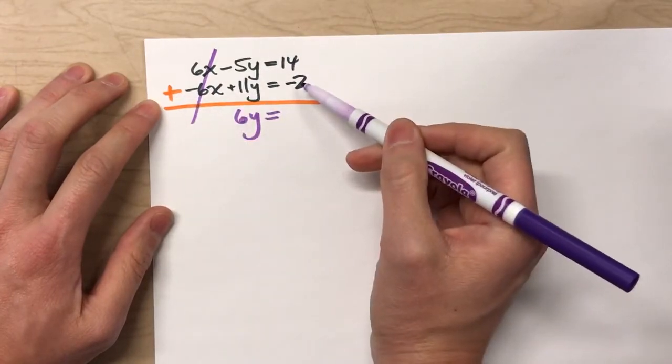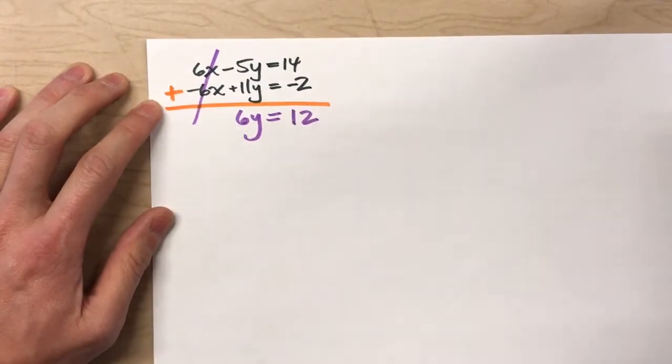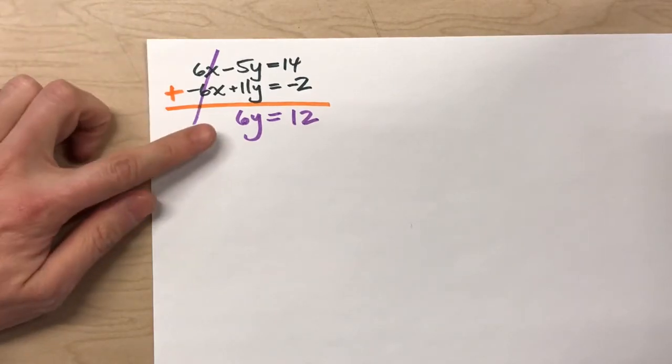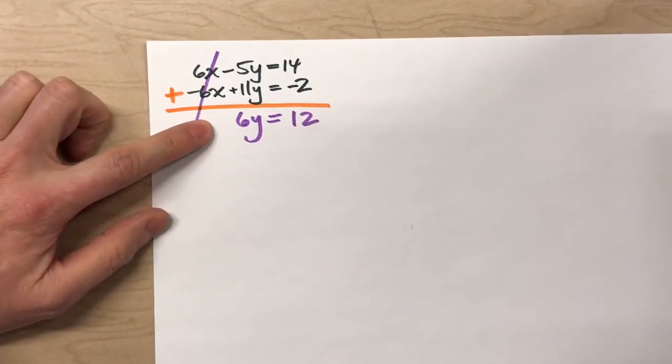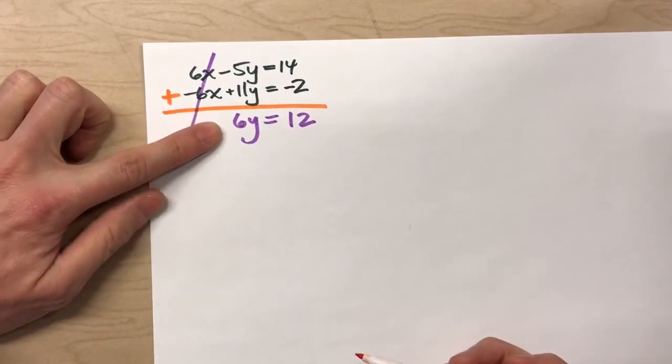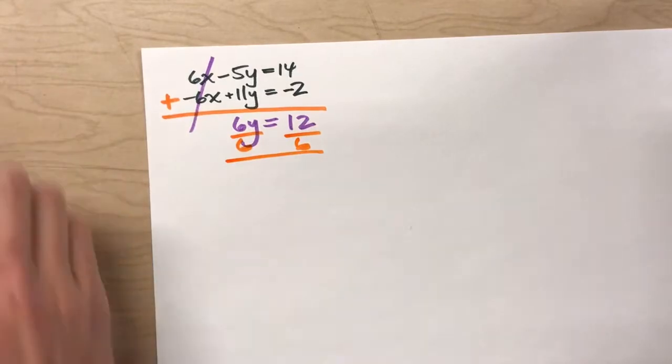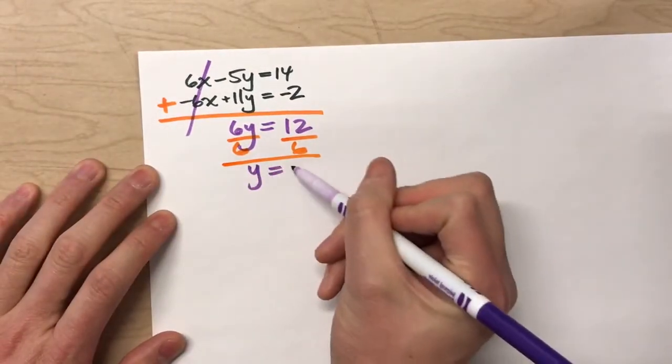14 plus negative 2 is 12. Now, by adding those two equations together, I've made a simpler equation that I can actually solve. So, 6y equals 12. Divide both sides by 6. Y equals 2.